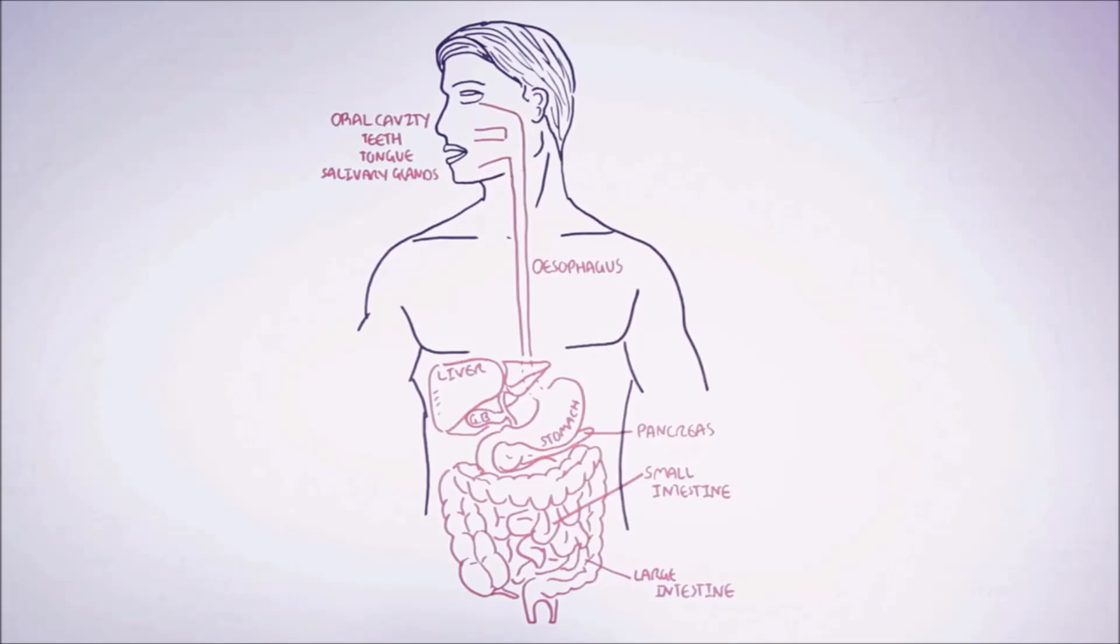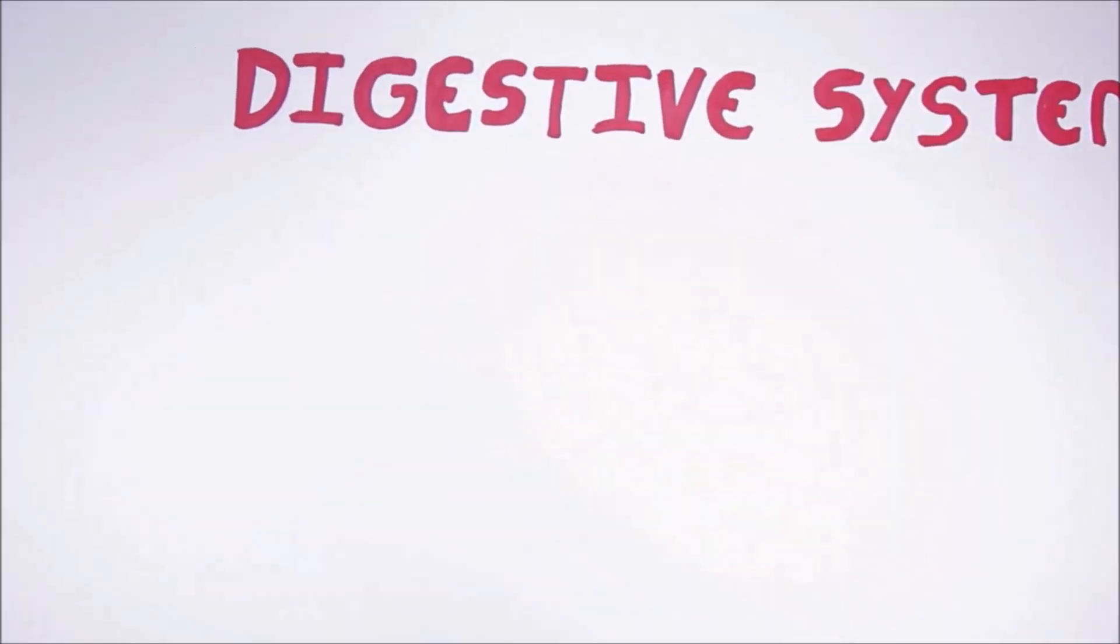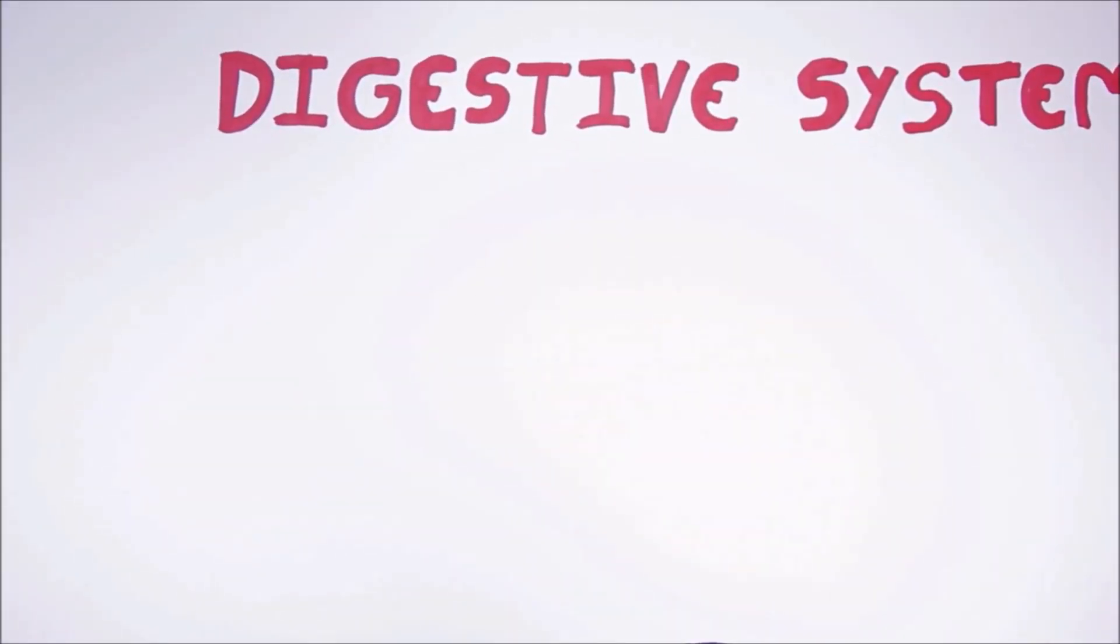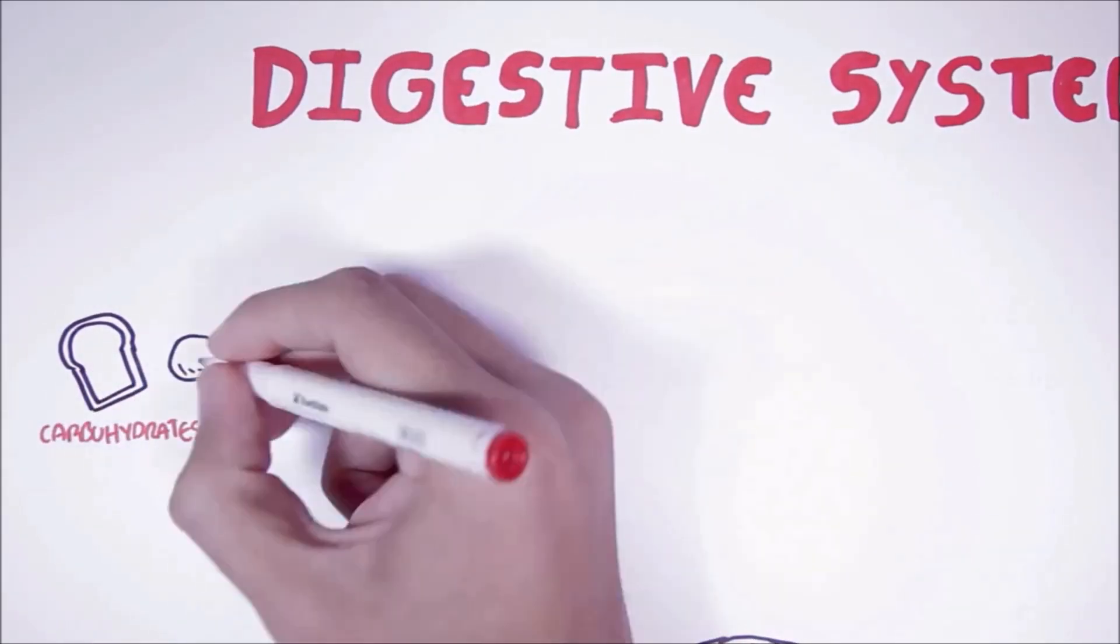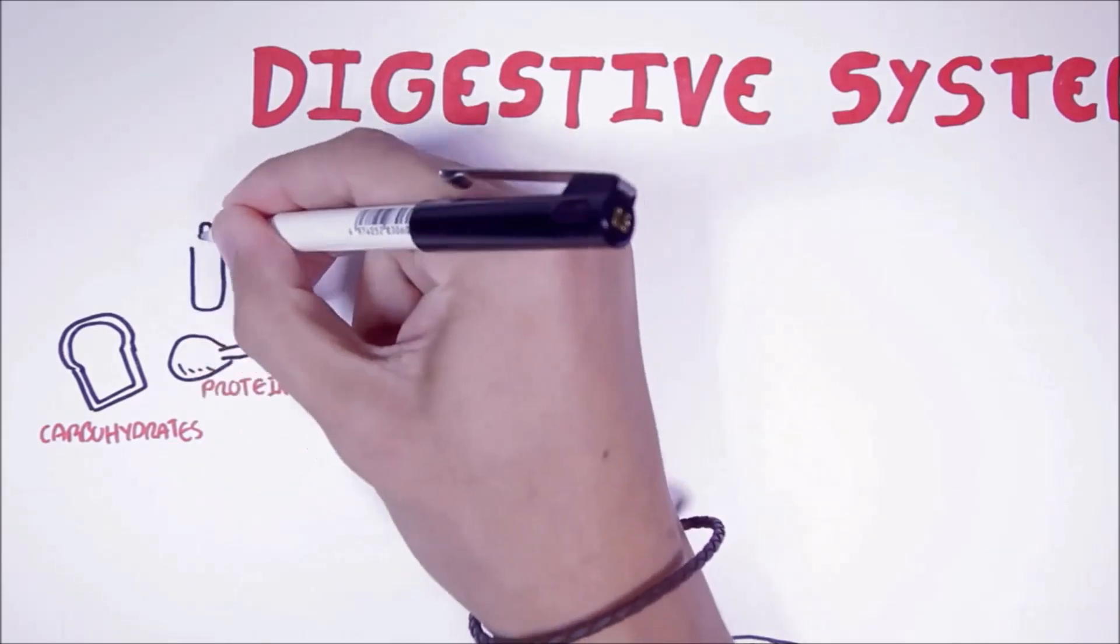Looking at a general overview of the digestive system, food can be grouped into three main categories: carbohydrates such as bread, proteins such as meat, and lipids such as oil.